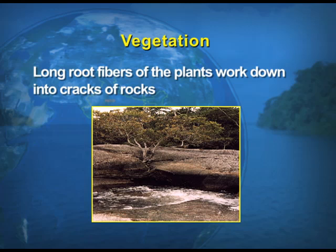The second agent of biological weathering is vegetation. You must have seen unwanted plants growing by the sides of walls or on roofs, which helps in breaking up the wall or roof. The same thing happens with vegetation, which helps in the disintegration of rocks. The long root fibers of plants work down into the cracks of rocks. As you can see in this visual, an unwanted plant by the side of a rock has helped in the disintegration of the rock.